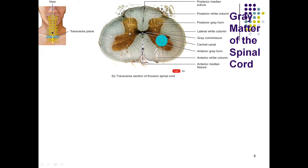Wrapping around the gray matter on the outer surface of the spinal cord is the white matter. White matter has myelin, so it's an insulated set of neurons — and these are where the highways are. Those highways for nerve impulses are going to move through the white matter, while the butterfly of gray matter is going to be a processing center.